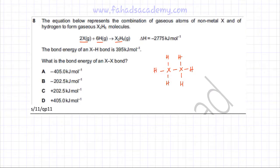So I've drawn the structure of X₂H₆ and you can count the number of bonds that are being formed. There is one X-X bond that's being formed. So let's list the number of bonds that are being formed. There is one X-X bond that's being formed.